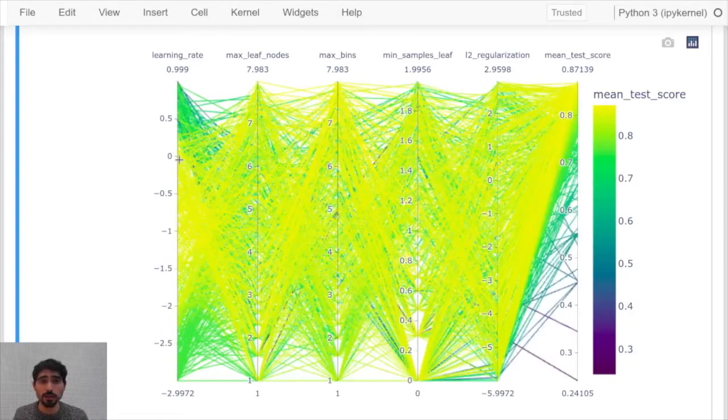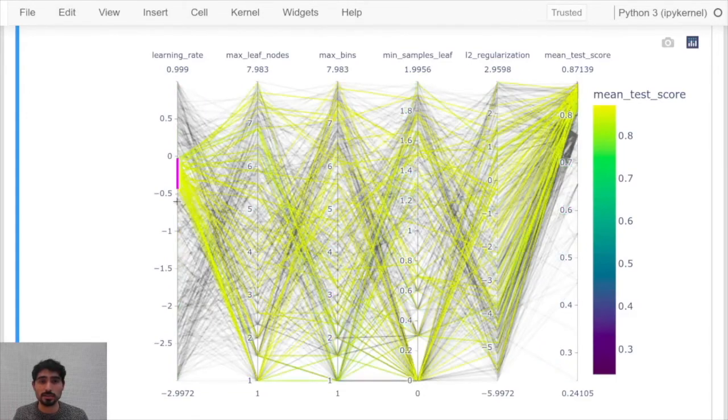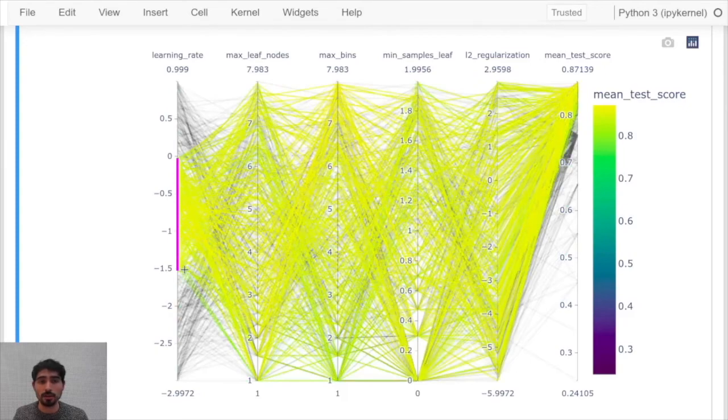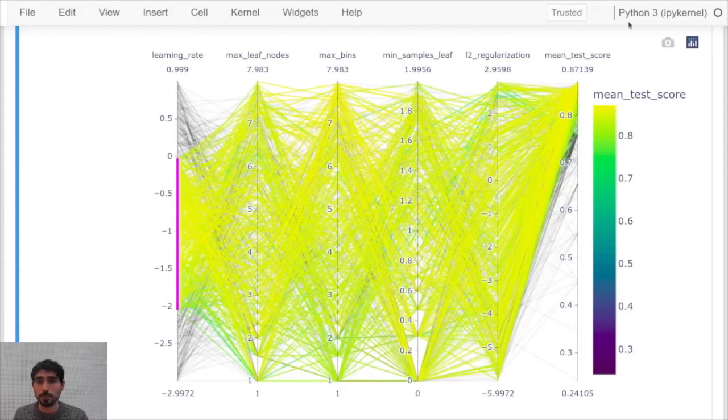Maybe you can ask yourself the inverse problem like what will happen if I select for instance this range of learning rate between 10 to the zero and 10 to the minus two and it will always translate to a good score.